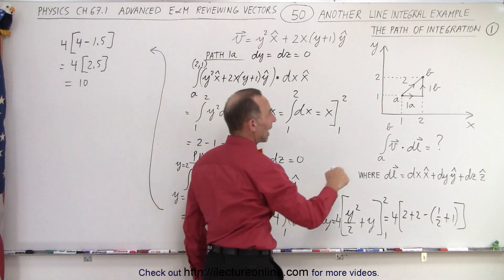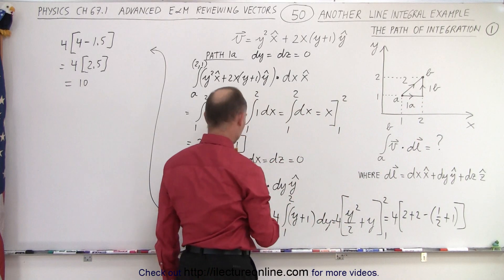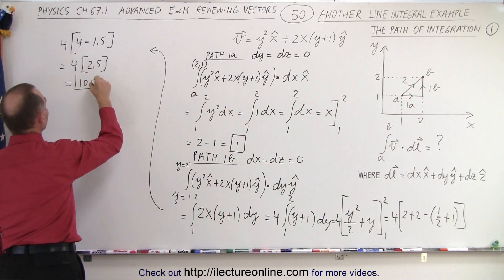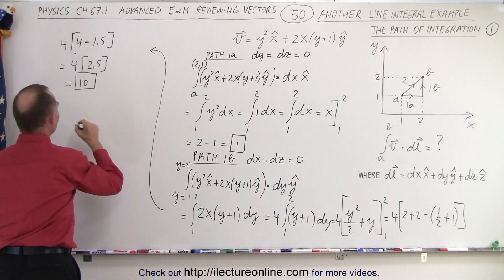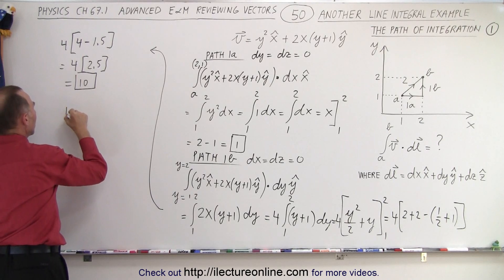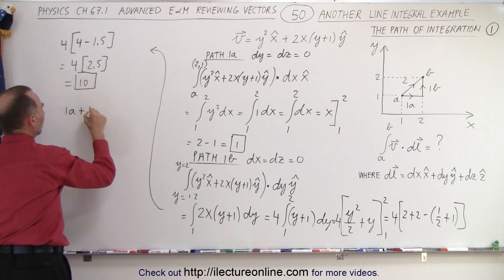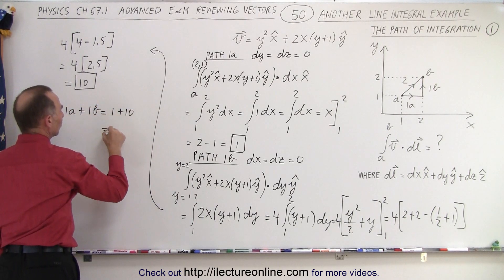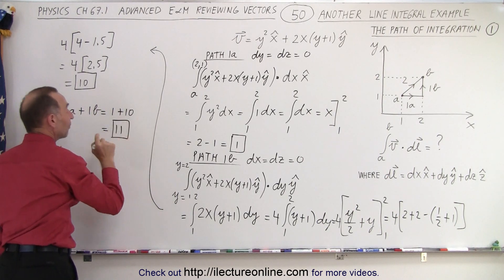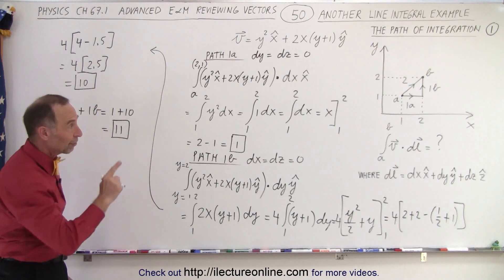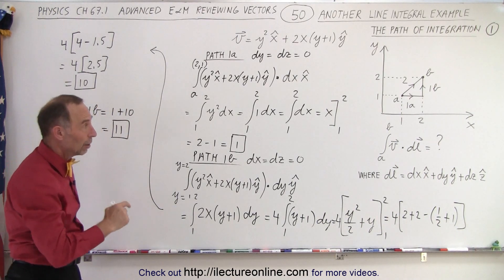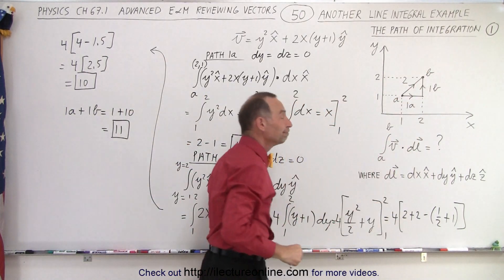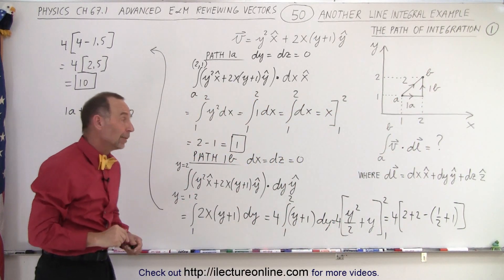So path 1a gave us 1 and path 1b gave us 10. Adding them together: 1 + 10 = 11. That is the value of the line integral traveling from A to B along paths 1a and 1b. And that is how it's done.